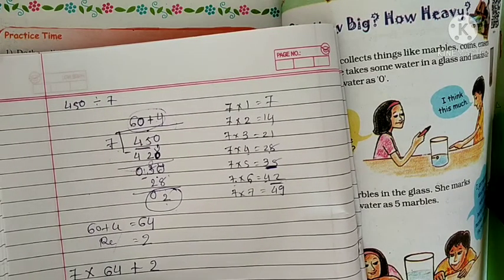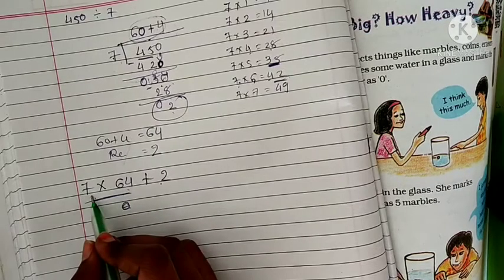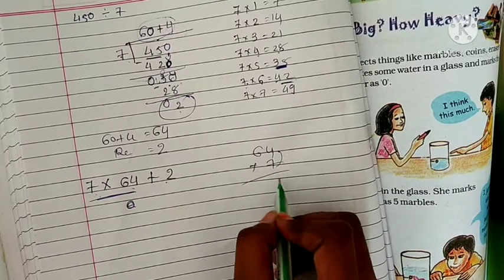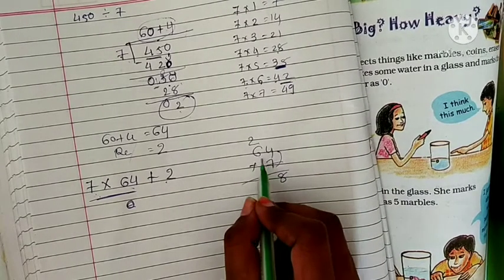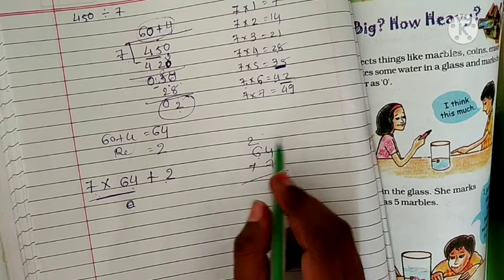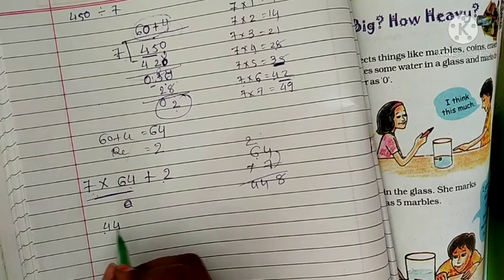64 times 7 plus 2. So what happens to the answer? 64 times 7: 7 times 4 is 28, 2 carry. 7 times 6 is 42, plus 2 is 44.